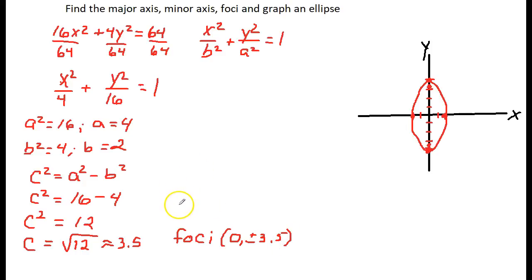My vertices, I'm just going to do plural, so vertices are at, now remember, vertices are related to a, so it's under y, so square root of 16 we had was 4, so it's going to be 0, comma, plus or minus 4.